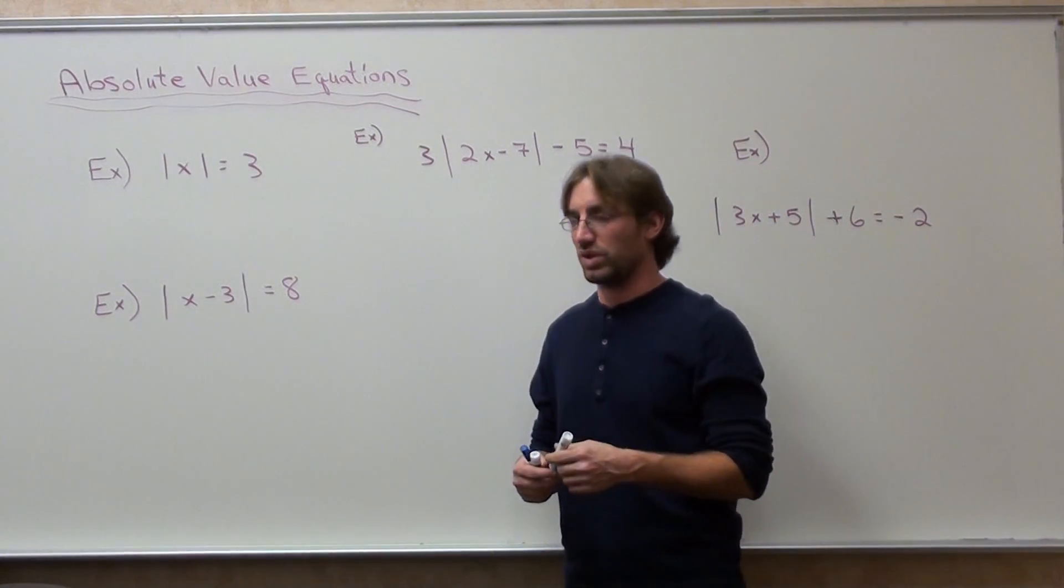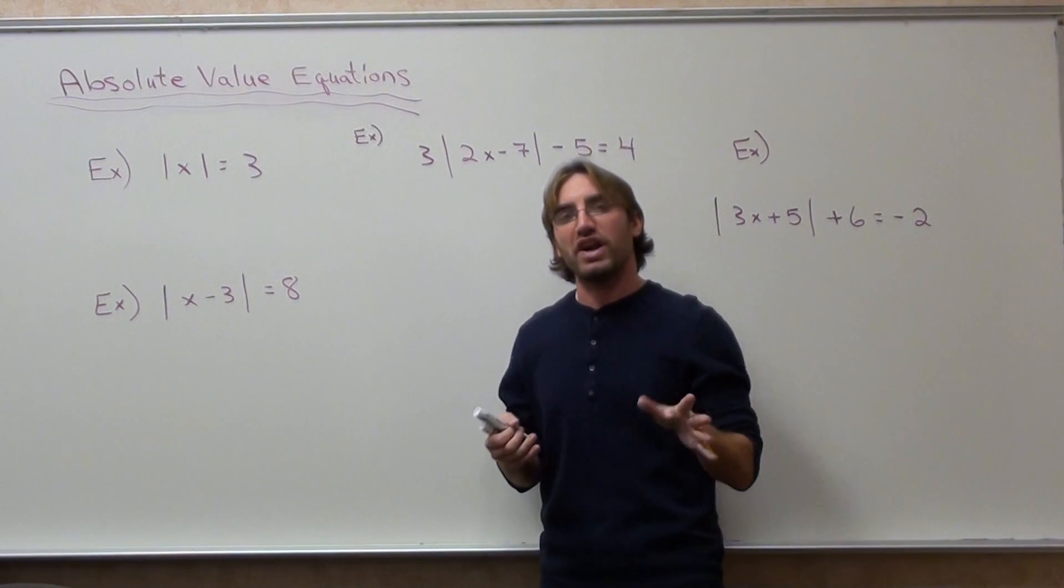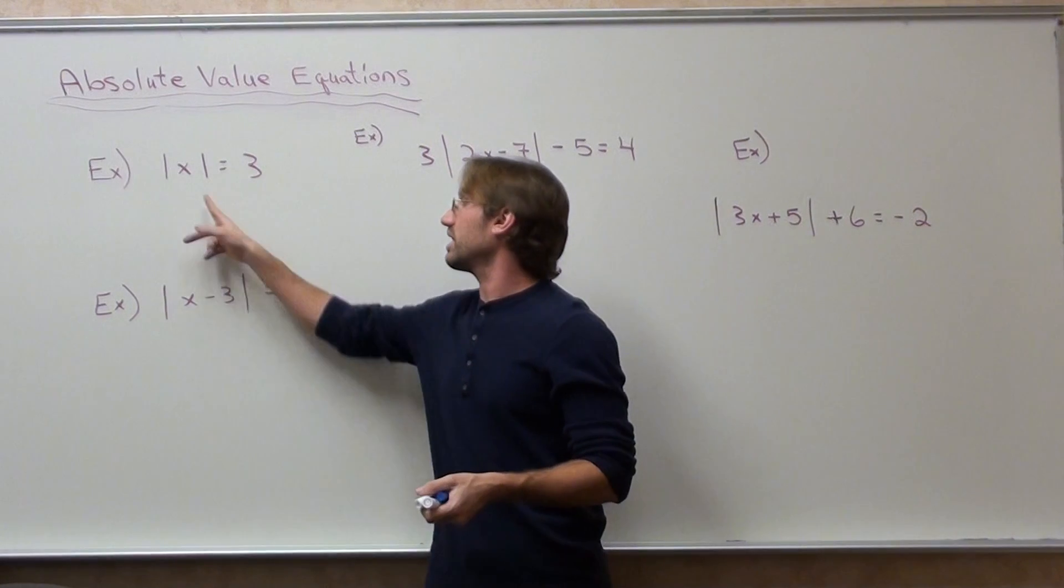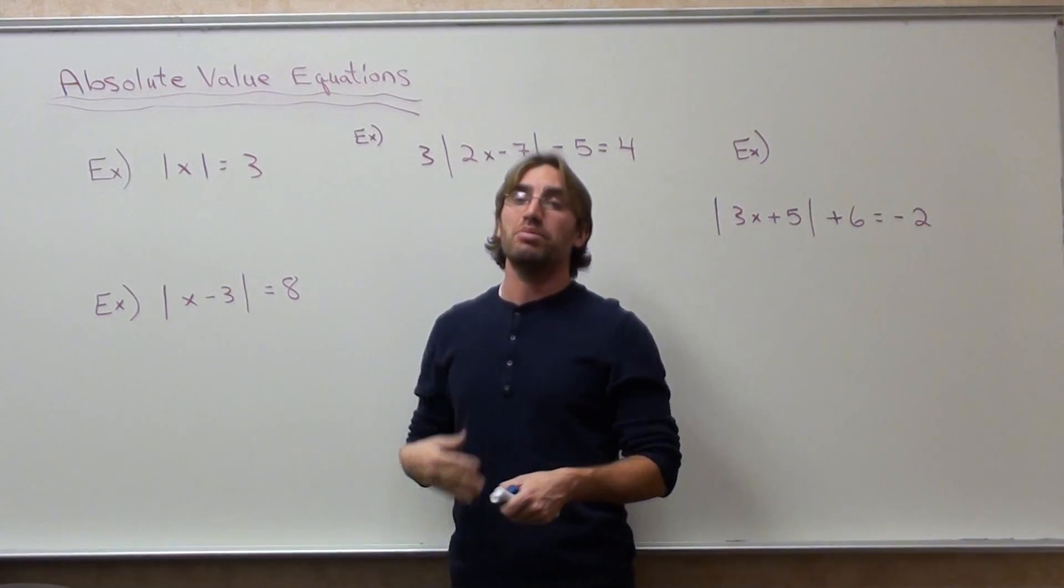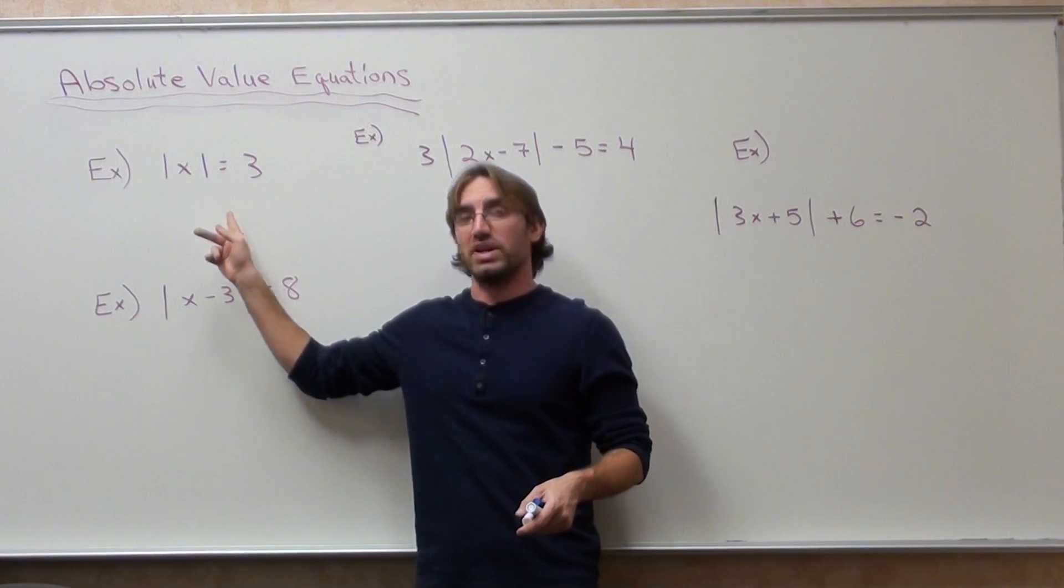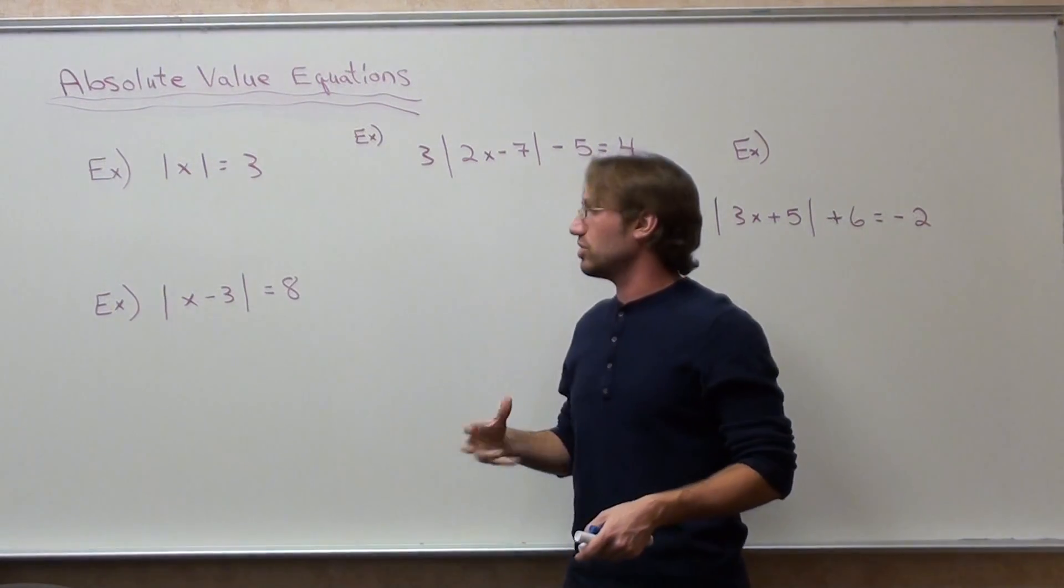Let me show you how to do the first one. Now you could go ahead and substitute in values that will work. What value will work that will make this equation true? One of them is three. The absolute value of three is three. But there is another answer that works. The absolute value of negative three is also equal to three. And that's what we're trying to do here.